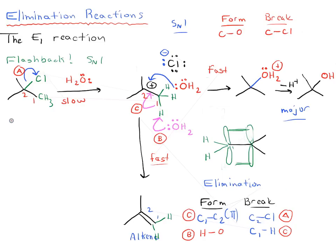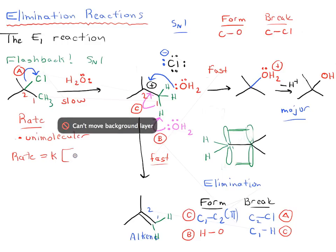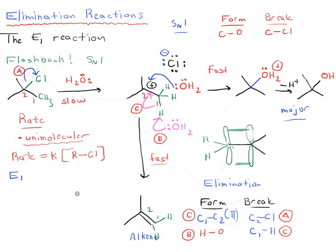A little more about the observations we see in this reaction. We find that the rate of the reaction is also unimolecular. The rate determining step is unimolecular. What that means is that the rate equals our rate constant times only the concentration of our substrate RCl. The concentration of water is irrelevant for the rate of this reaction. This means that it's unimolecular. And since it's an elimination and unimolecular, we use the name E1 to distinguish the name of this reaction, the E1 reaction.